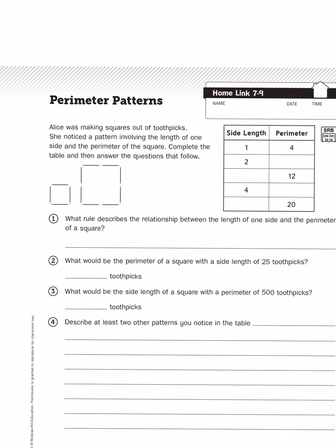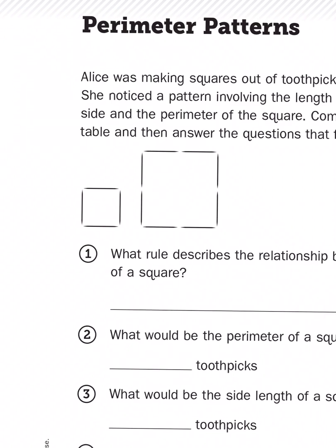Alice noticed that if she used one toothpick per side of a square, when you add up those measurements you get a total of four toothpicks. Perimeter is the measure of the outside, so if I'm just counting toothpicks here, one, two, three, four, I've got four toothpicks, a measurement of four for my perimeter.